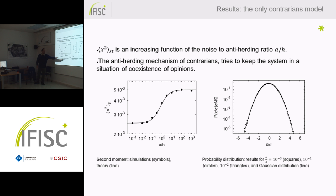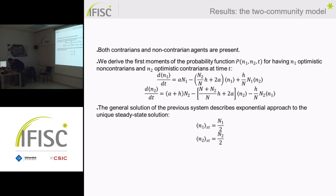A short note on the probability distribution: the fluctuations of the magnetization are very small, and experimentally we see that it fits a Gaussian probability distribution for the different parameter cases explored in our simulations.